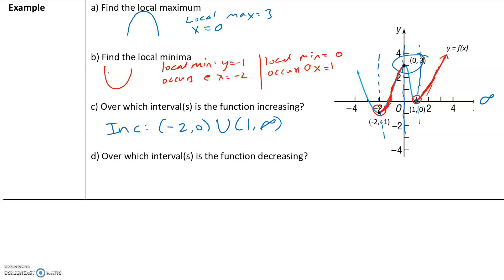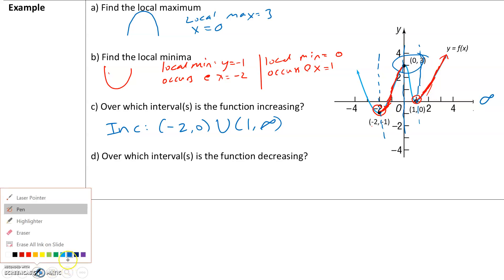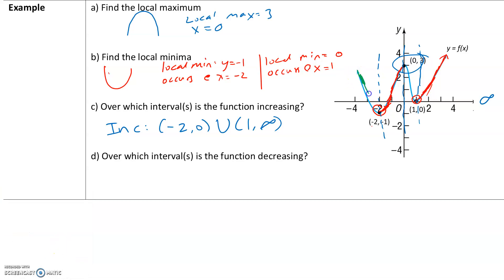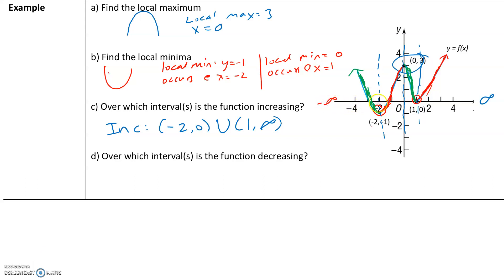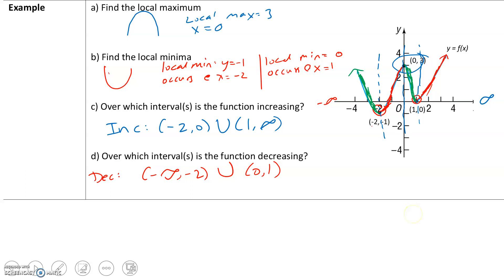Over which intervals is the graph decreasing? Decreasing means the graph is going down — the y values are going down. The graph is decreasing here and also here. From negative infinity all the way until negative 2, the graph is decreasing. It's also decreasing from x equals 0 to x equals 1. Remember, we only use parentheses for increasing and decreasing, because at the turning points the graph is neither increasing nor decreasing.